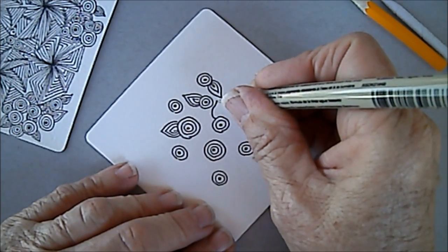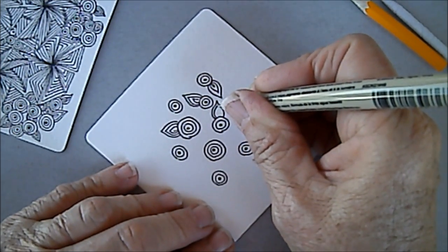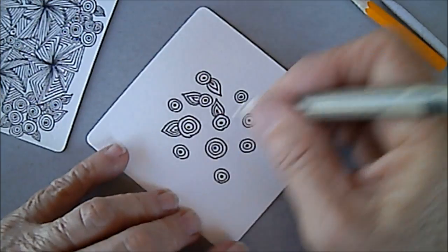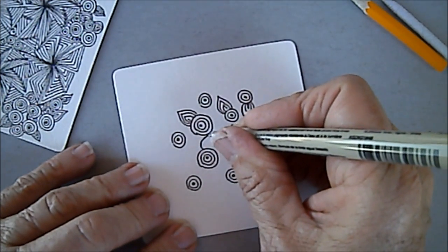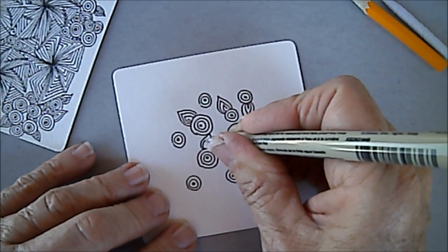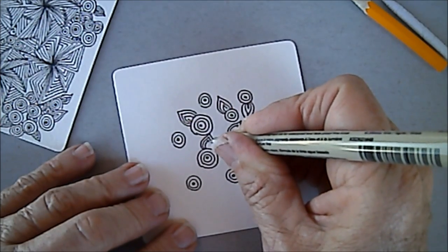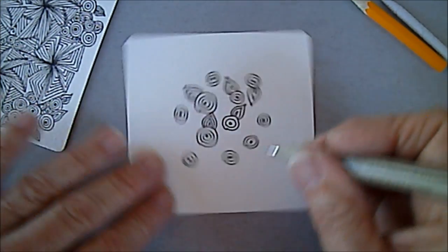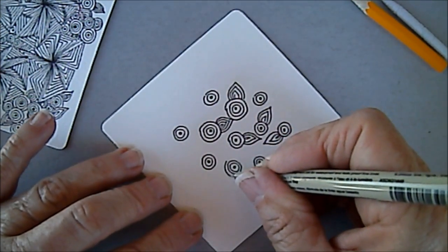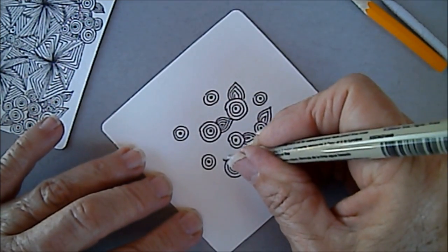And I'm just going to put leaf shapes on every single one of these and then echo in. I'm going to draw another circle around here.